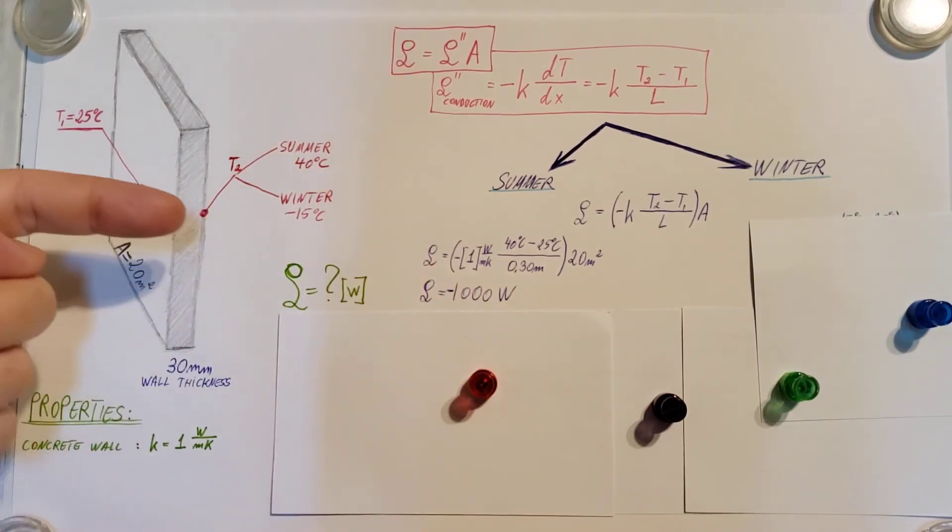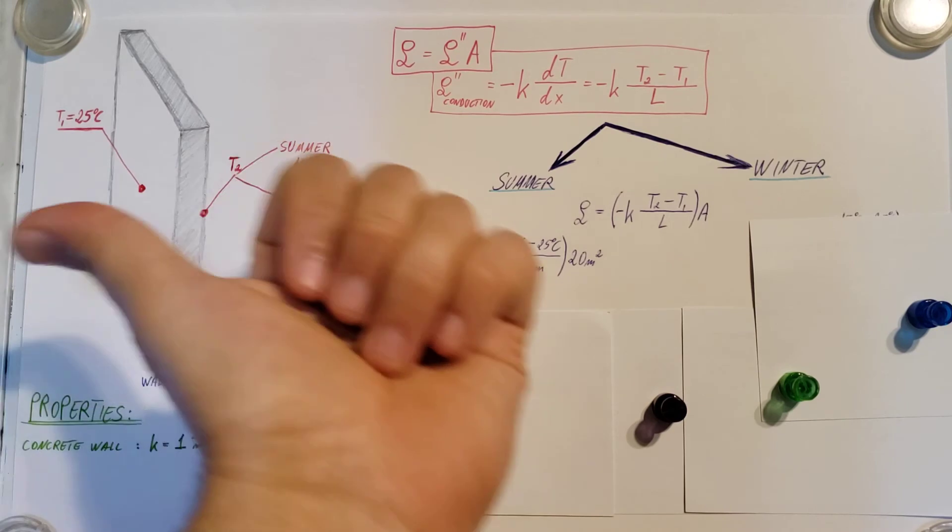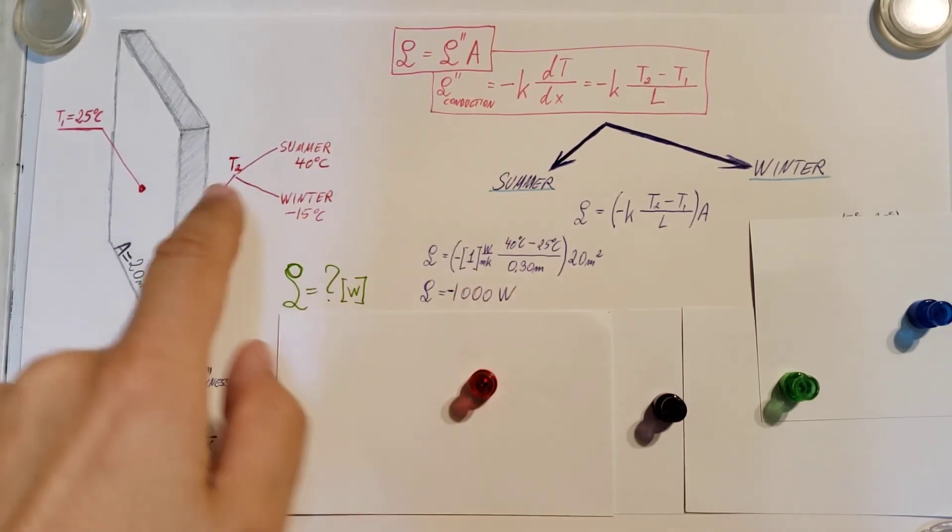It's telling us that heat is not being transferred that way. It's this way. And that is 1,000 watts.